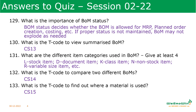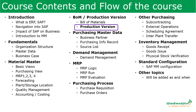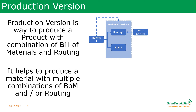Hope this recap was useful for you to understand bill of materials. Now we will discuss production version. So what is production version? Production version is a way to produce a product with a combination of bill of materials and routing. Production version denotes different ways by which a company can produce a material.